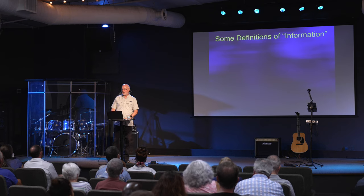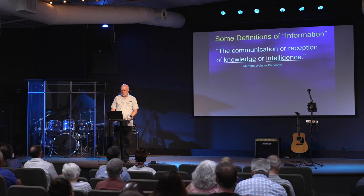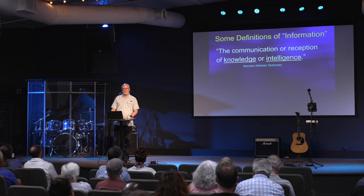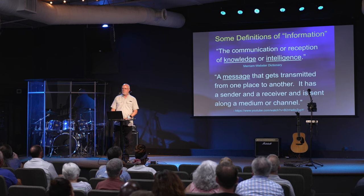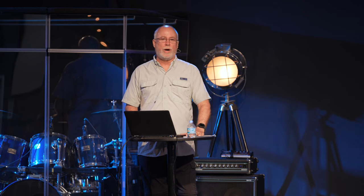Some definitions for information: the communication or reception of knowledge or intelligence. What's implied there? Knowledge and intelligence. A message that gets transmitted from one place to another — it has a sender, a receiver, and is sent along a medium or channel. Almost every definition of information talks about knowledge, and knowledge implies intelligence. So it's quite easy to get from believing there is genetic information to believing there is a source of that information. It's quite a stretch to believe that random processes have generated complex, detailed information.